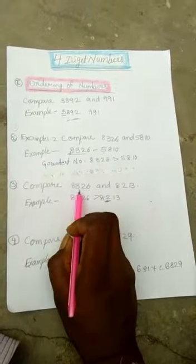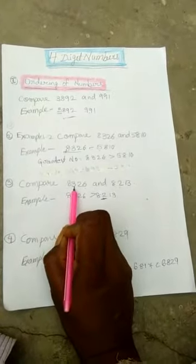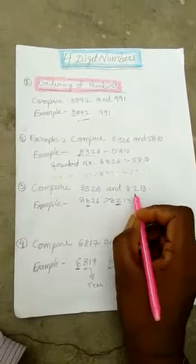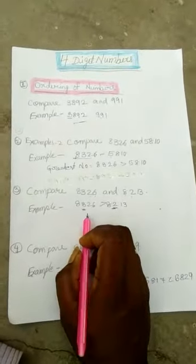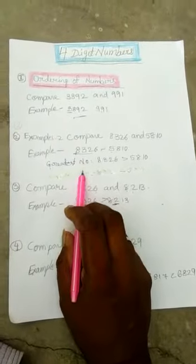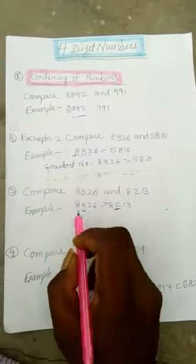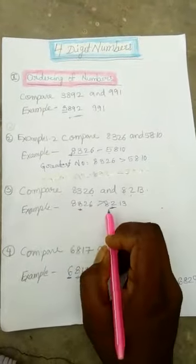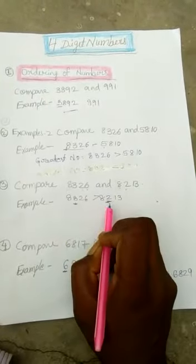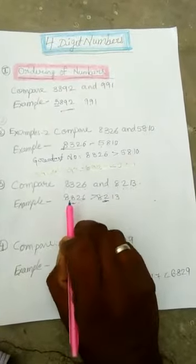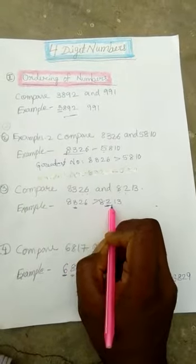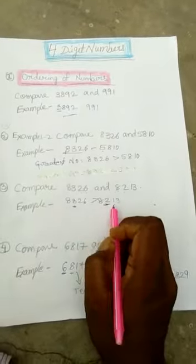Next question: 8326 and 8213. We compare again. In the previous question we compared the thousands place. Now we compare the hundreds place, because 8 is in the thousands place for both numbers. But 3 is in the hundreds place here, and 2 is in the hundreds place there. So, 8326 is greater than 8213.